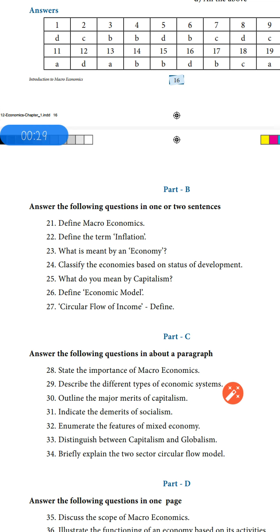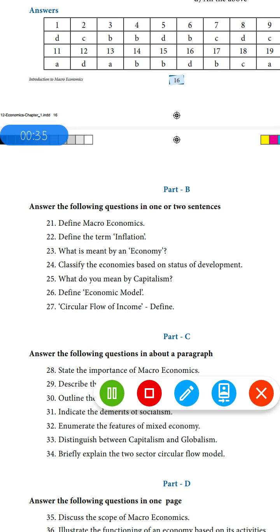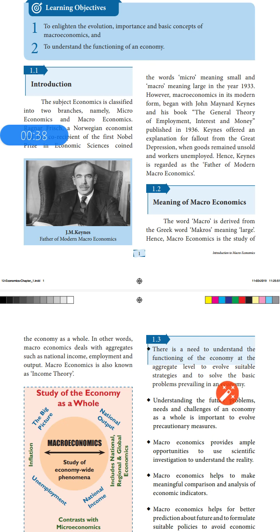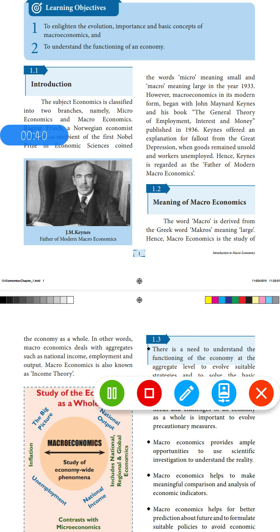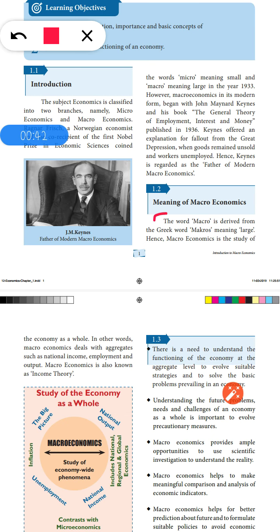Part B is a two-mark question. First question: define macroeconomics. The word 'macro' is derived from the Greek word 'macros' meaning large. From here till — macroeconomics is also known as income theory. This is your first question answer.